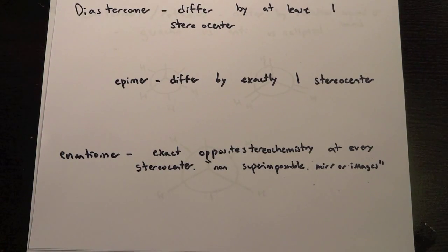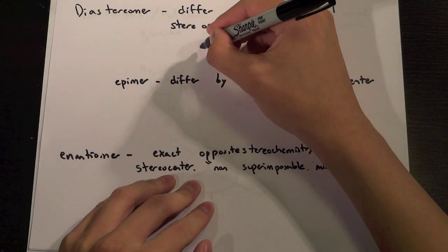And the next one we would look at is diastereomers, so they differ by at least one stereocenter. So that would be something like, say you had RRR versus RRS.